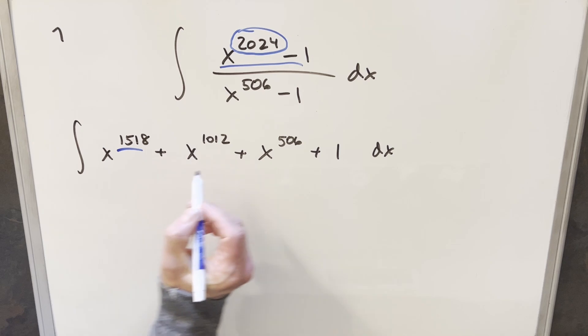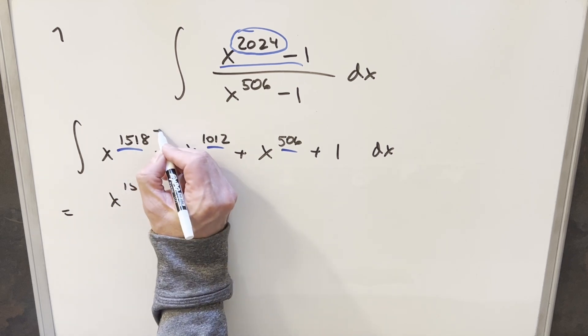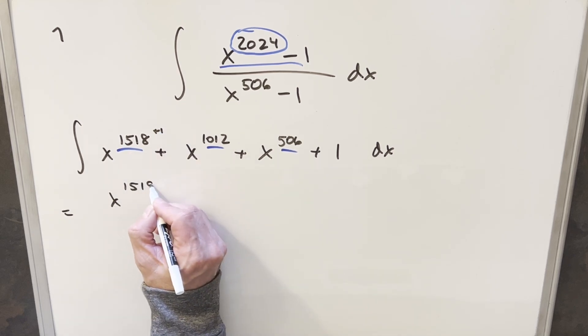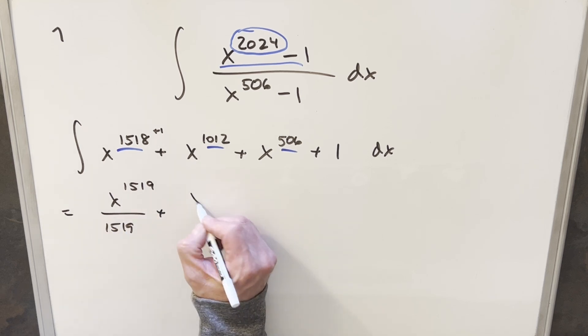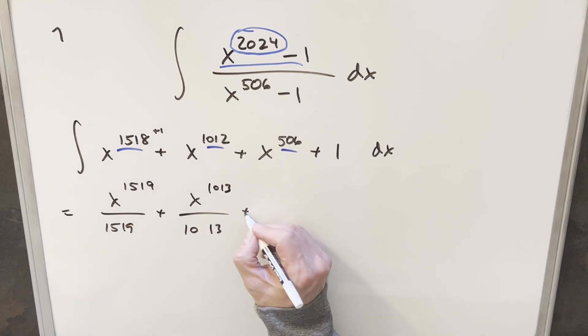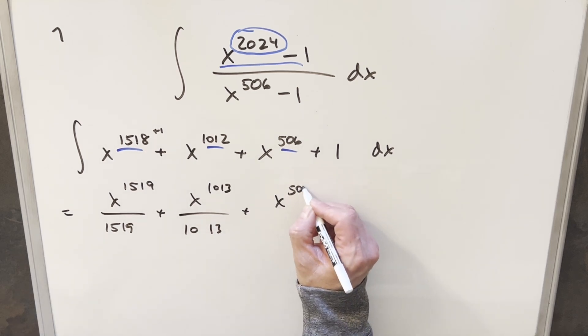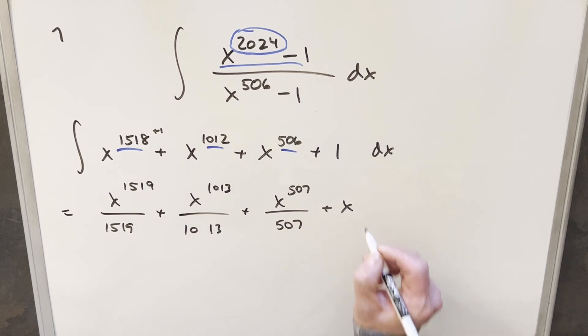Okay, now from here, even though we've got really large exponents, it's just power rule, so this should be easy to finish. So what I'm going to do, let's just integrate this. So first, we're going to have x to the, just doing, adding plus 1 here, right? We're going to have x to the 1519, over 1519, plus x to the 1013, over 1013. Then here, this is going to become x to the 507, over 507, plus x, put a plus c, and that's it.